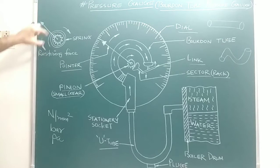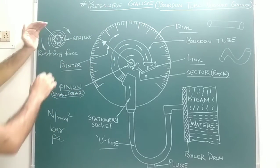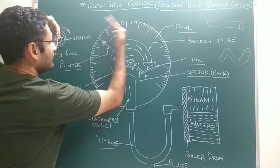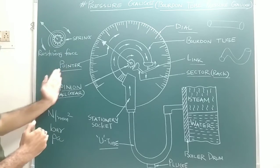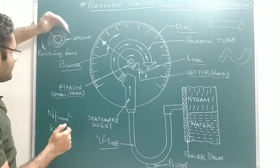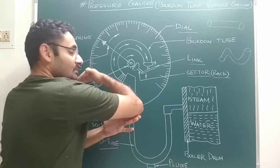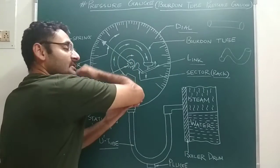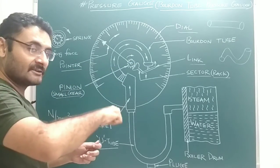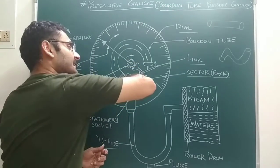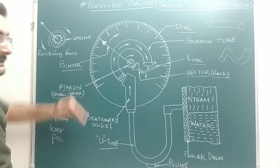The pinion is connected with a spring. When pressure inside the Bourdon tube is less, the spring releases its restoring force in the opposite — anticlockwise — direction. Initially the spring is coiled in one direction; when pressure is released, the spring applies restoring force in the anticlockwise direction, causing the pinion to rotate anticlockwise and the pointer to return to its original position.